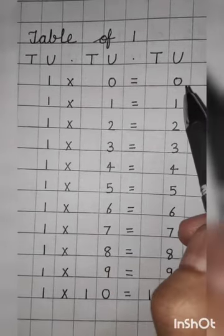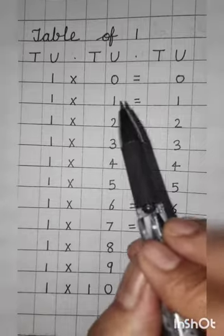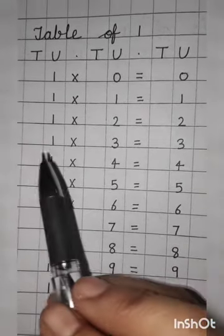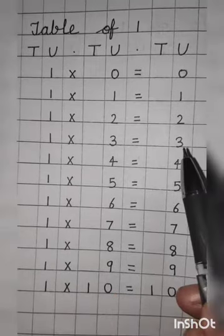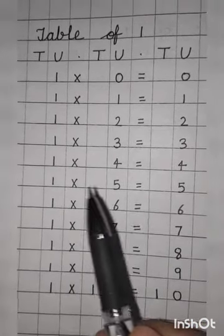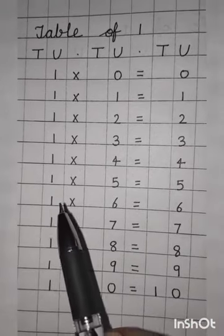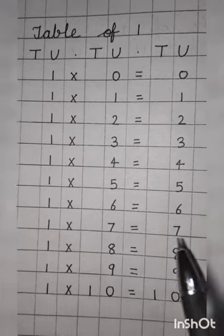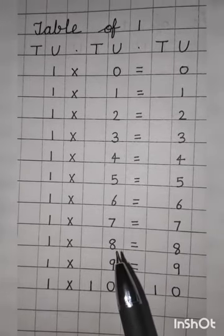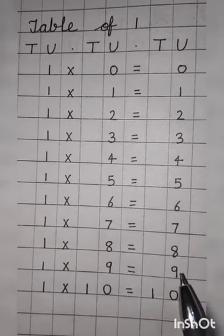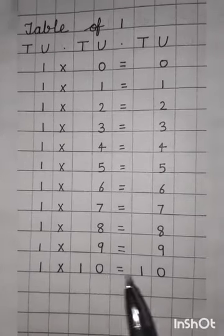One zeros are zero. One ones are one. One twos are two. One threes are three. One fours are four. One fives are five. One six are six. One sevens are seven. One eights are eight. One nines are nine. One tens are ten.